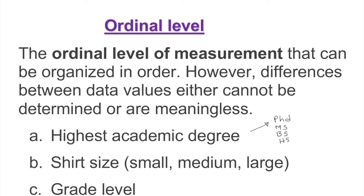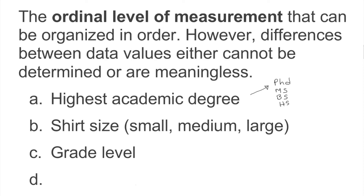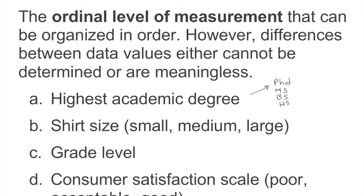Grade level is also ordinal — for example, 9th grade, 10th grade, 11th grade, and so on. Another example is a consumer satisfaction scale — for example, categories like acceptable, good — some kind of survey scale. That is also ordinal level data.